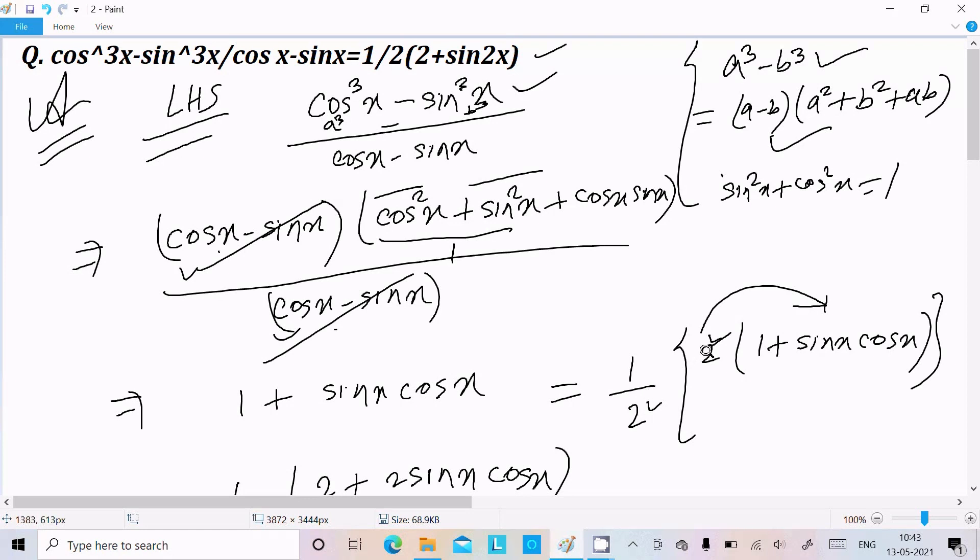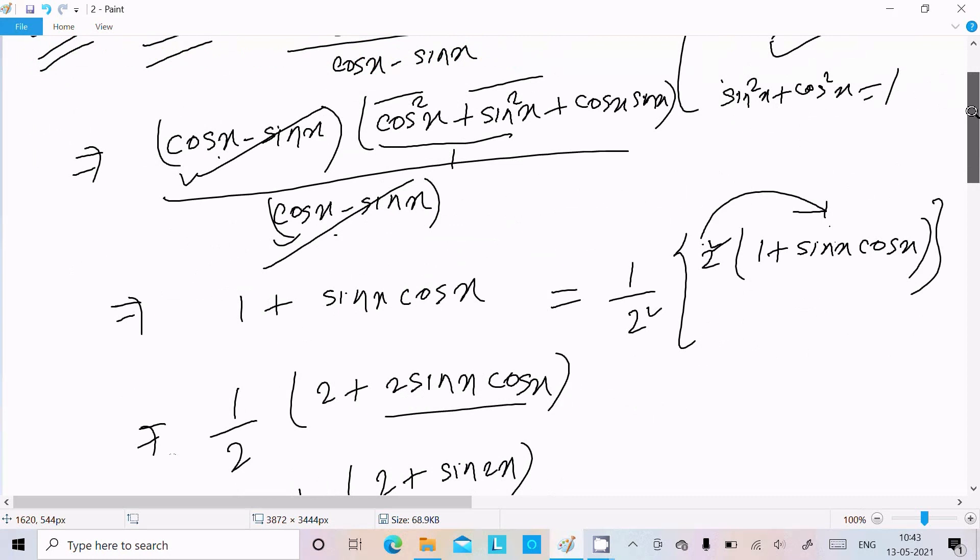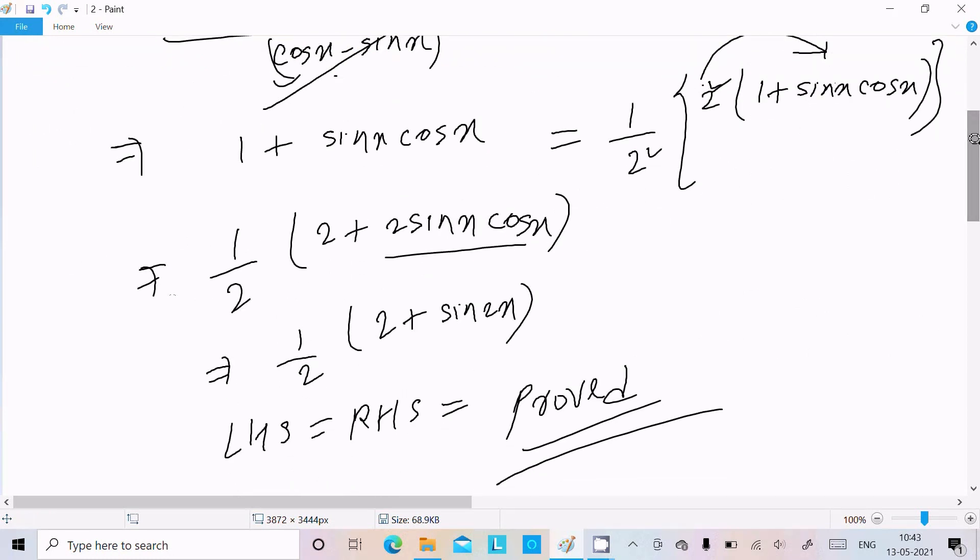Now we need to get 1/2. So multiply 1/2 in the numerator and denominator, and multiply this 2 with the terms inside. After that, 2 plus 2sinx times cosx. That is sin2x. And here we write 2sinx into cosx, the value is sin2x. After that you can easily prove.